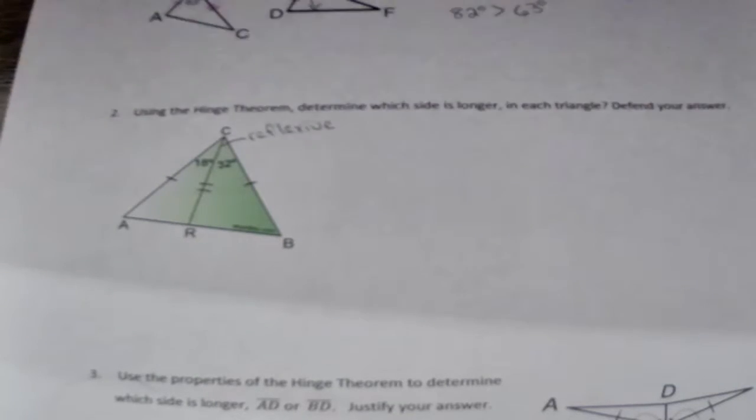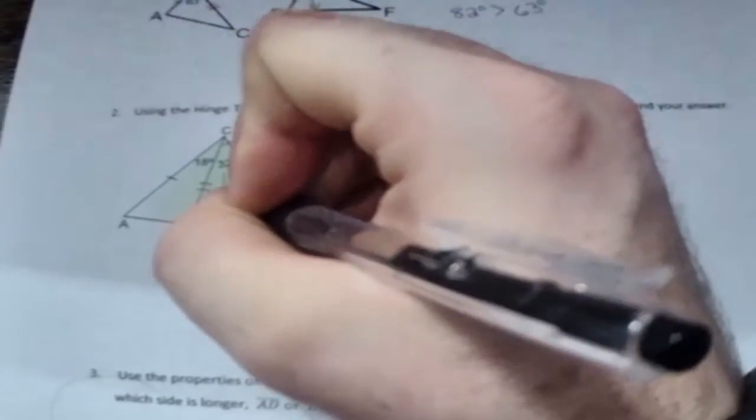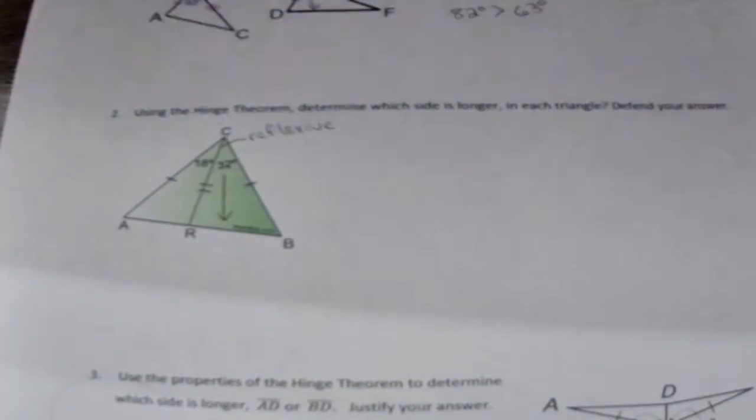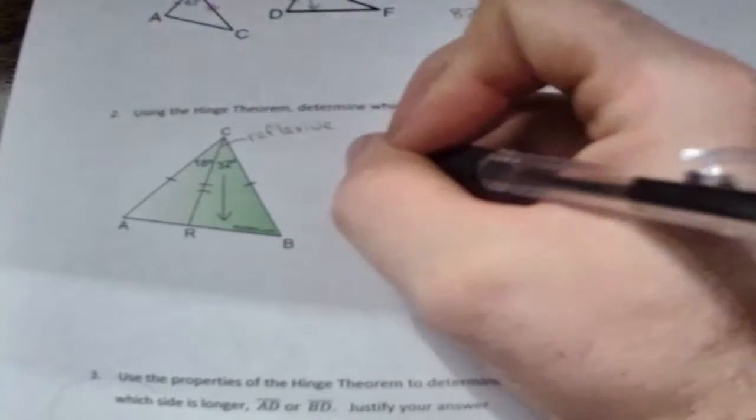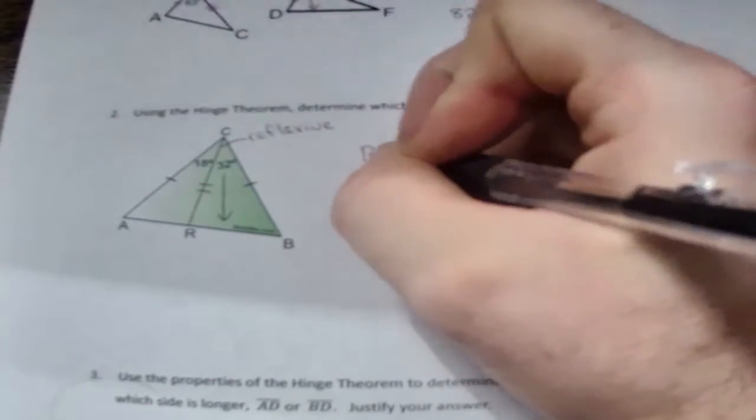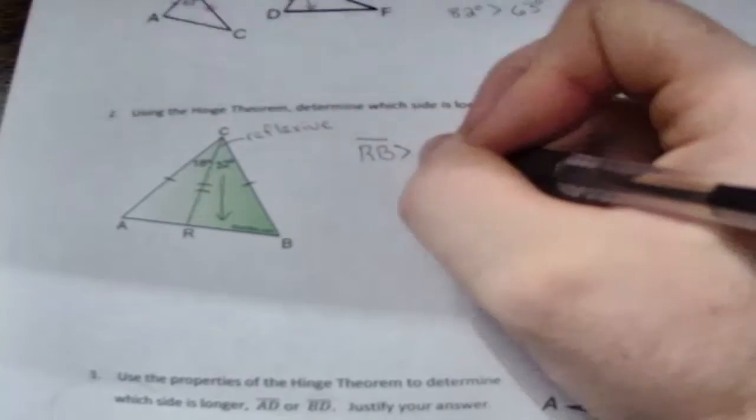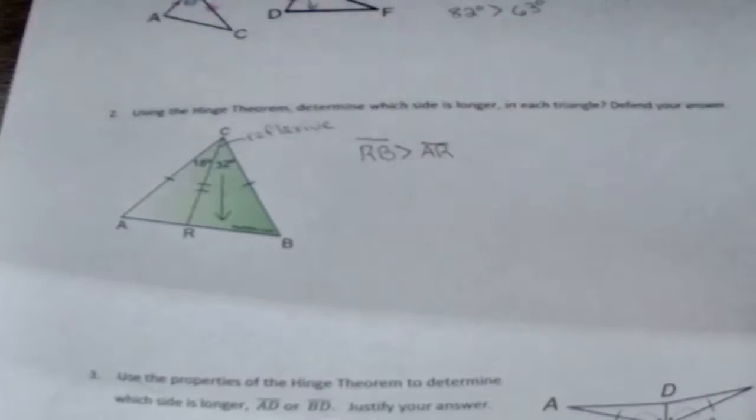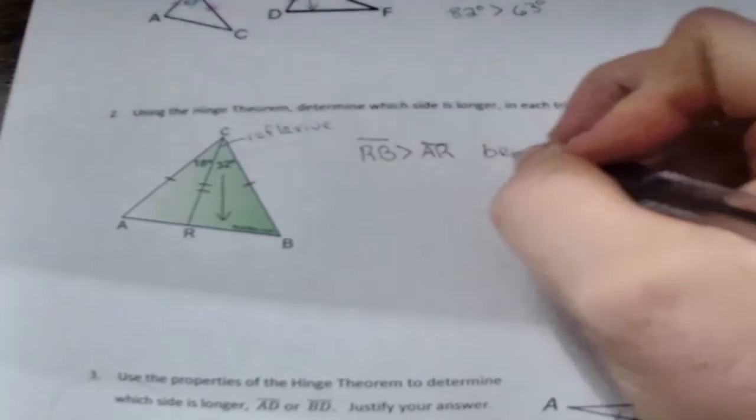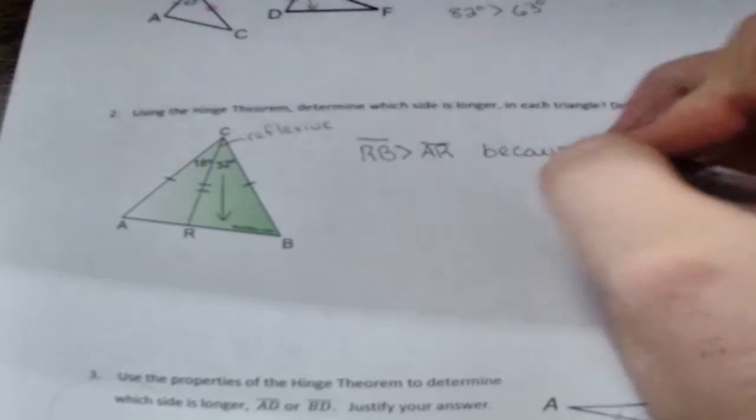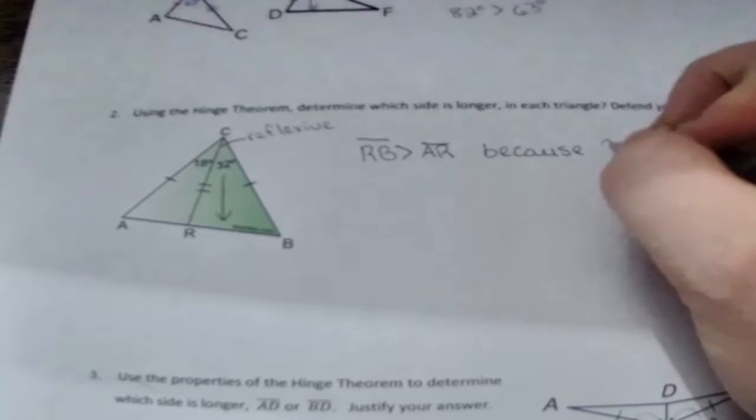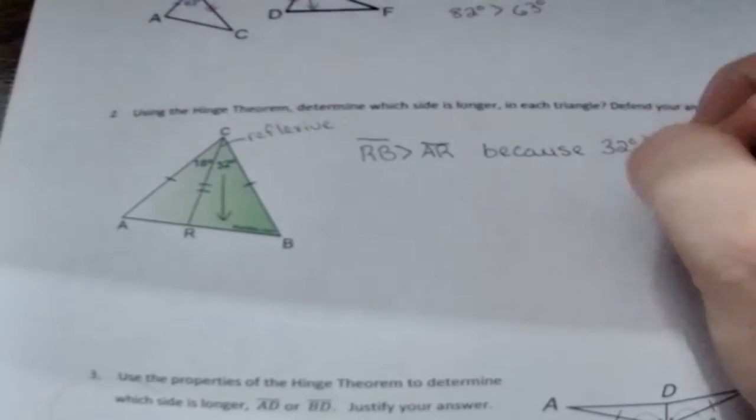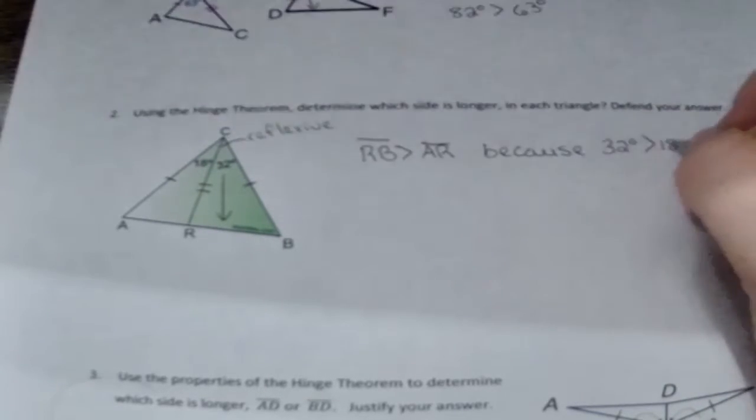Yes, 32 is bigger. So across from it will be the bigger side. So our answer is RB is greater than AR because - this is where we have to defend our answer - it's because 32 degrees is greater than 18 degrees.